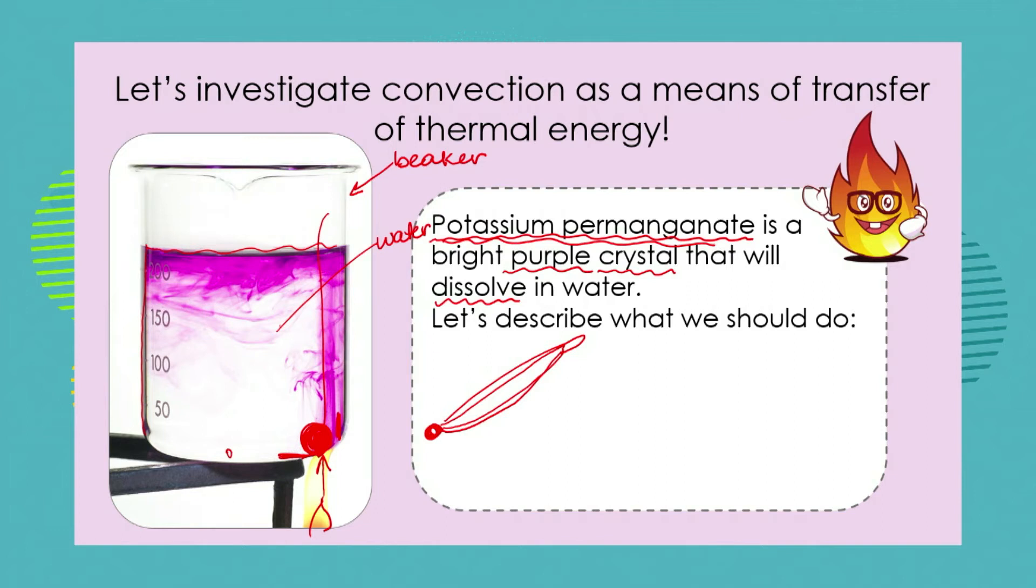If you get to do this investigation in class maybe there are some things that you need to remember. You mustn't just toss these crystals of potassium permanganate all over into the water or you're not going to see the convection currents properly. You've got to very gently place that little crystal at the bottom of the beaker and the other thing is the heat source must be directly under that little crystal. So those are important things to remember to make sure that our investigation works properly.